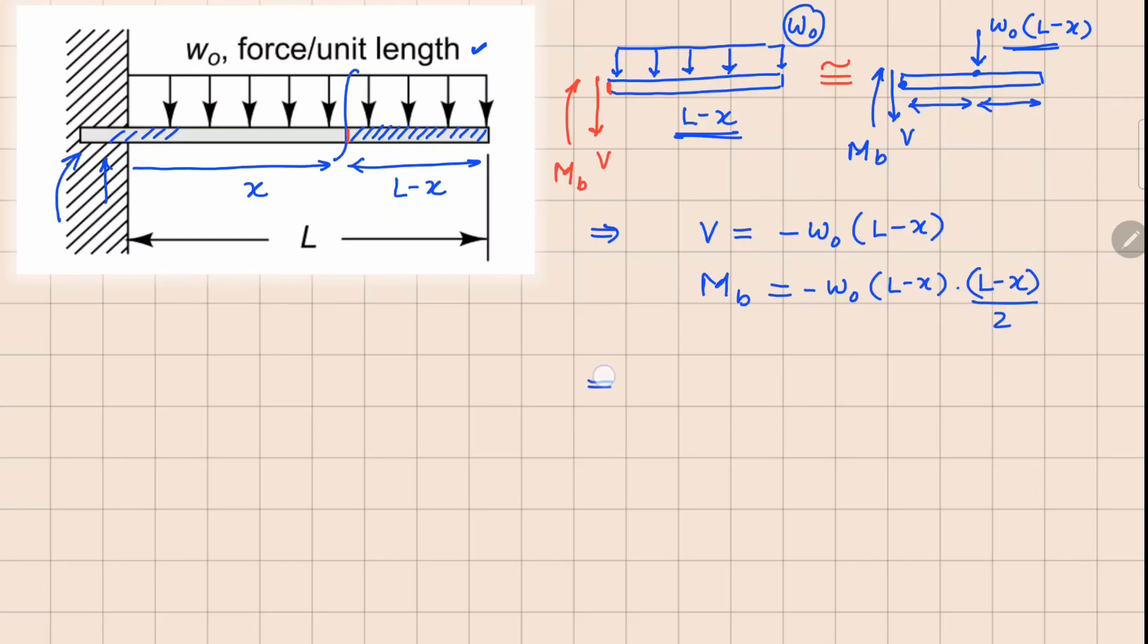So if you simplify this you get V equals w_0(x minus L) and your M_b value is minus w_0 over 2 times (L minus x), or (x minus L) whole square. So these are the values of shear force and bending moment.